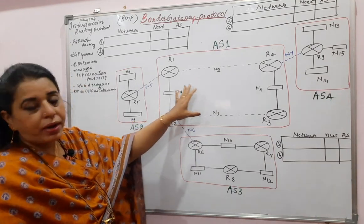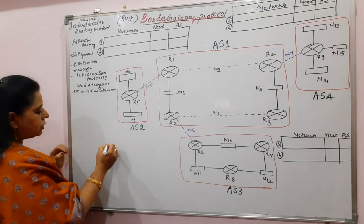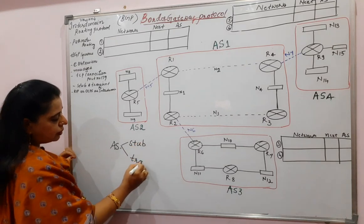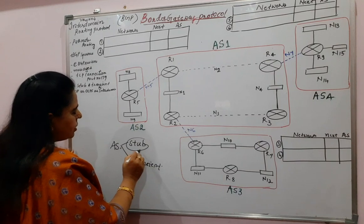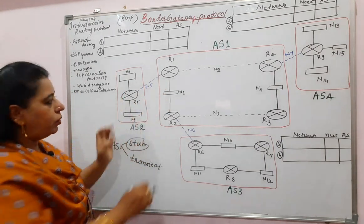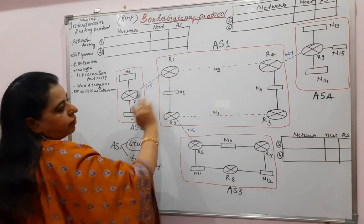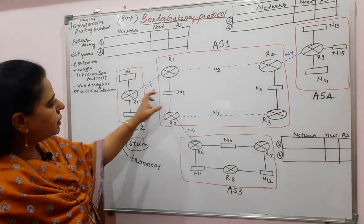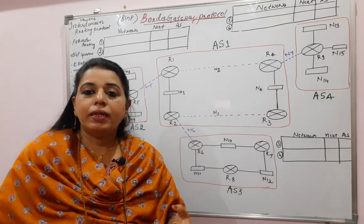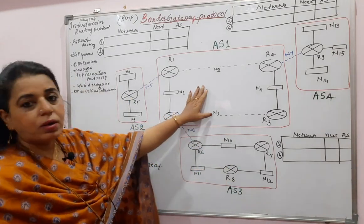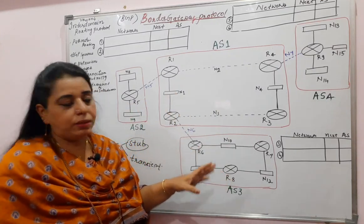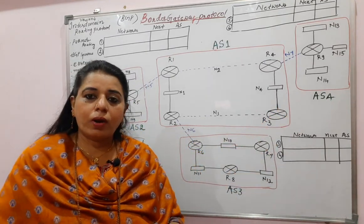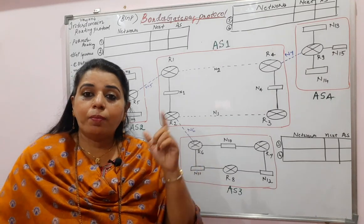Now, one important thing to remember: autonomous systems are classified as stub or transient. A stub autonomous system is connected to only one single autonomous system. AS2 is connected to AS1, AS4 is connected to AS1, and AS3 is connected to AS1 — these are stub autonomous systems. A transient autonomous system is connected to more than one autonomous system. So here, AS1 is connected to AS2, AS3, and AS4, making it transient. The connection between autonomous systems is through the border routers only.